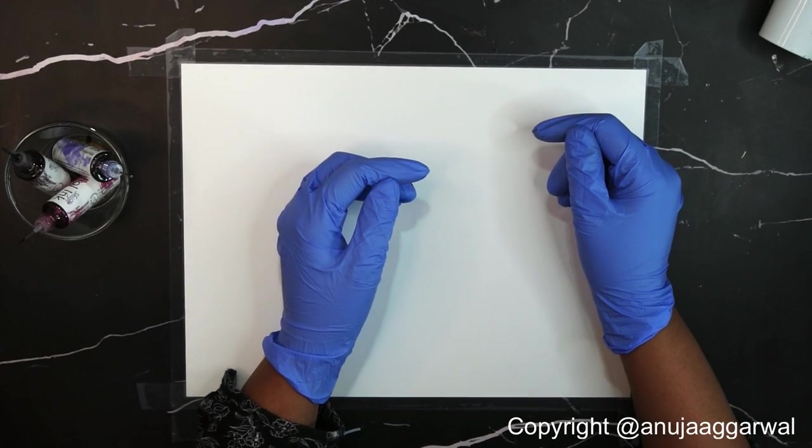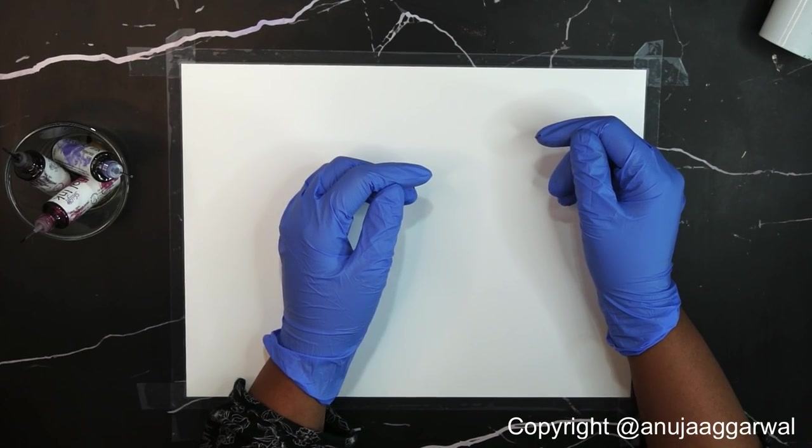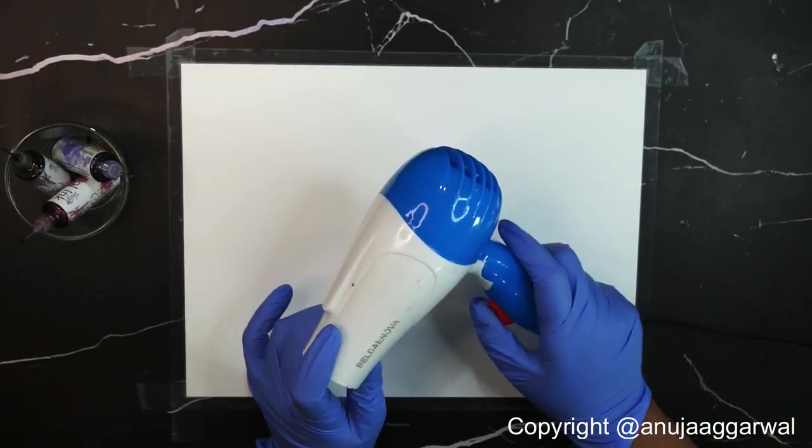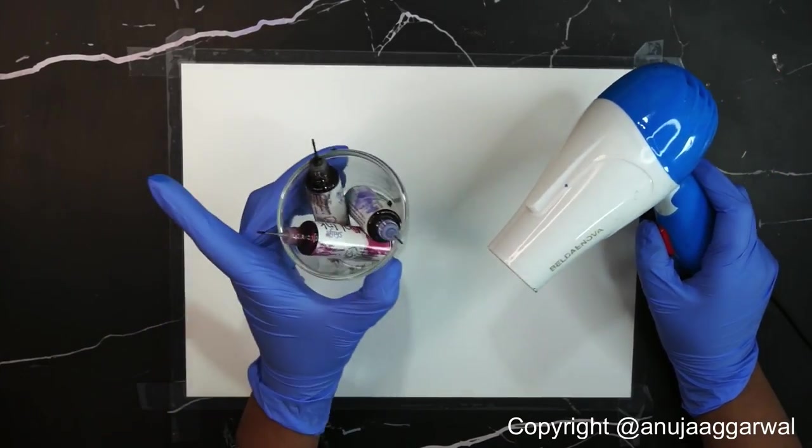In this video I'm going to show you another fun way of working with alcohol inks. My paper is already taped and this is a beginner video. All you need is a dryer, some inks, and alcohol.